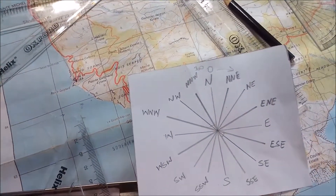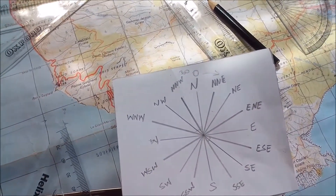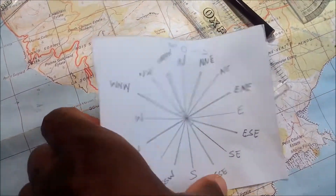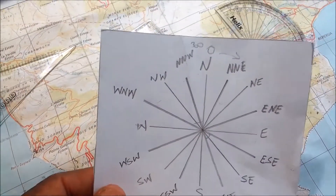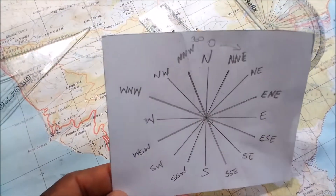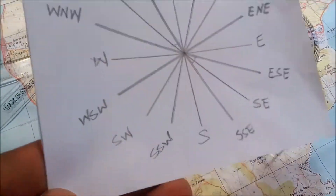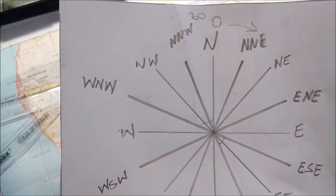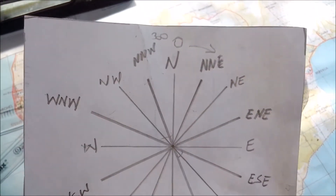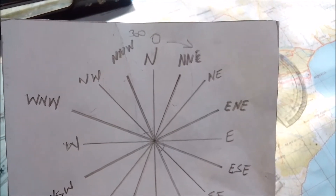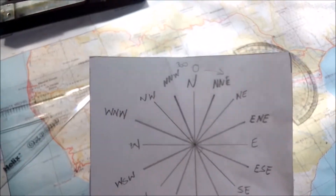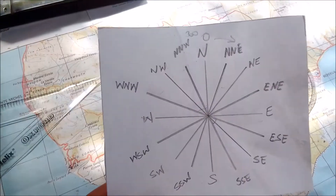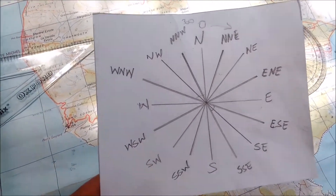A compass is an instrument used to calculate the direction between two points. We have the main cardinal points such as north, south, east, and west, and we have the sub-cardinal points such as north-east and south-east. We have 16 cardinal points on a map which we're going to be using to calculate exact direction between two points.